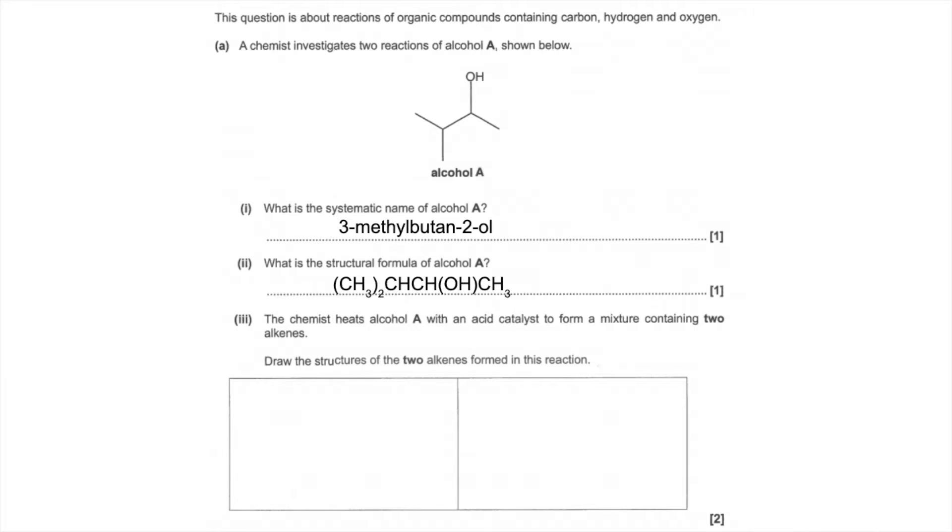Chemist heats alcohol A with an acid catalyst, so that acid catalyst removes water from the alcohol, so it's going to take the OH and an H from an adjacent carbon. So we can either take the H off here, it's going to put a double bond there, or it could take an H off here, put a double bond there.